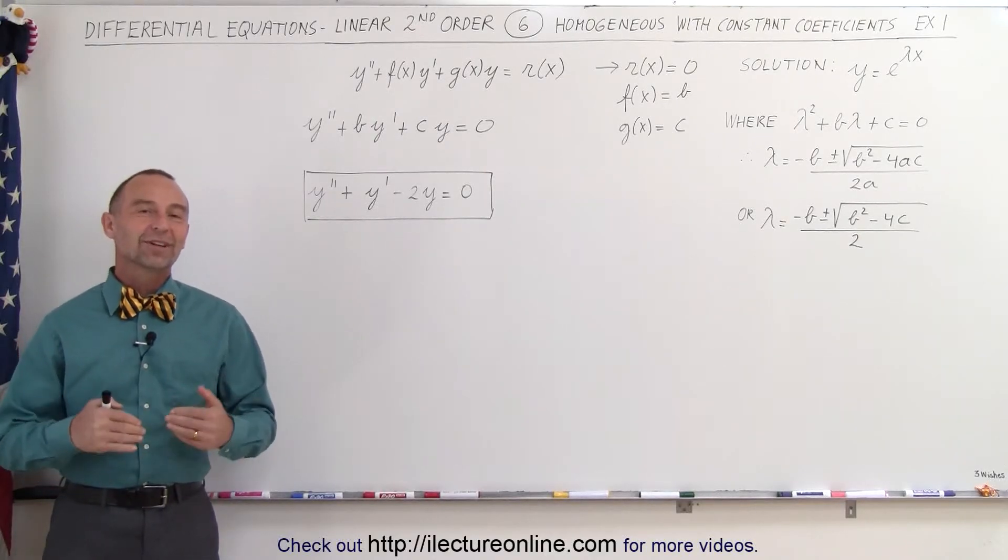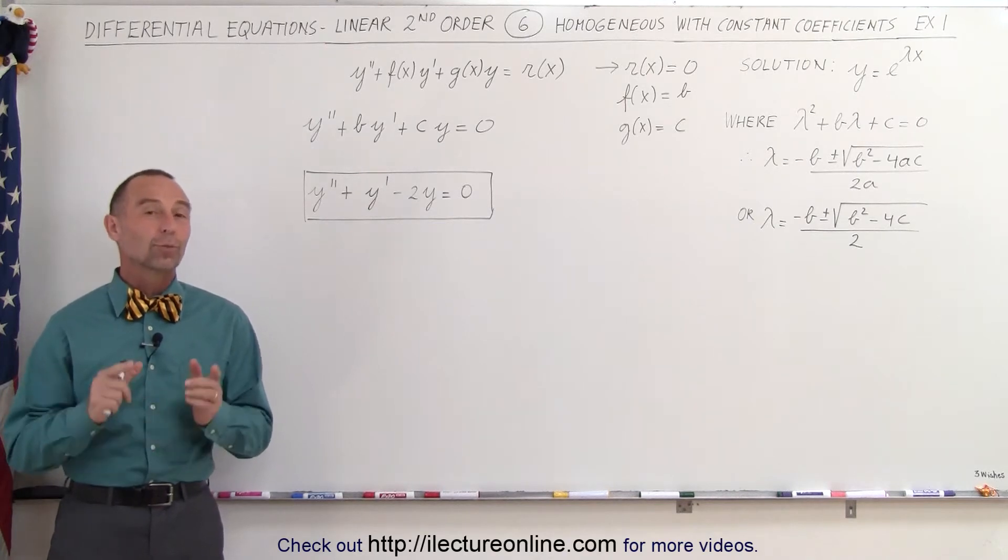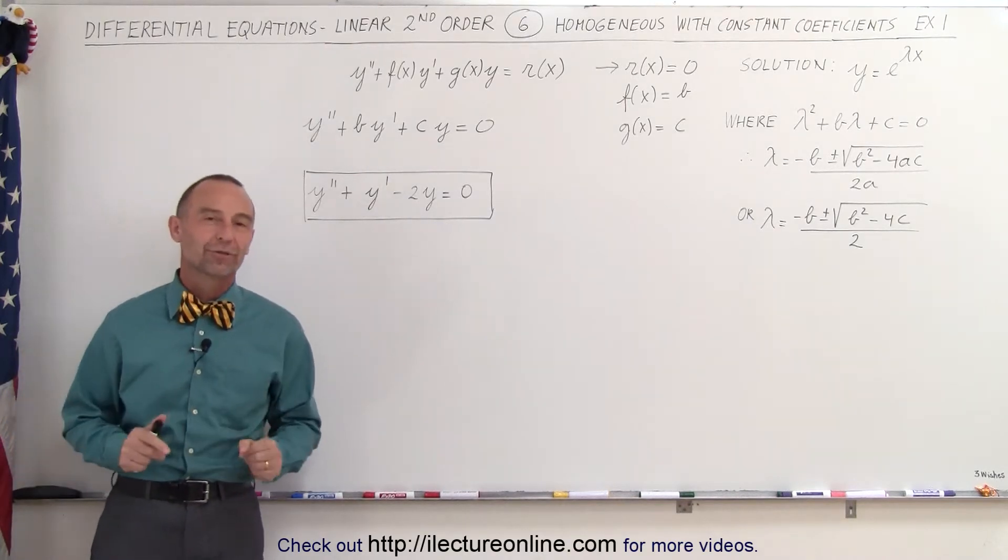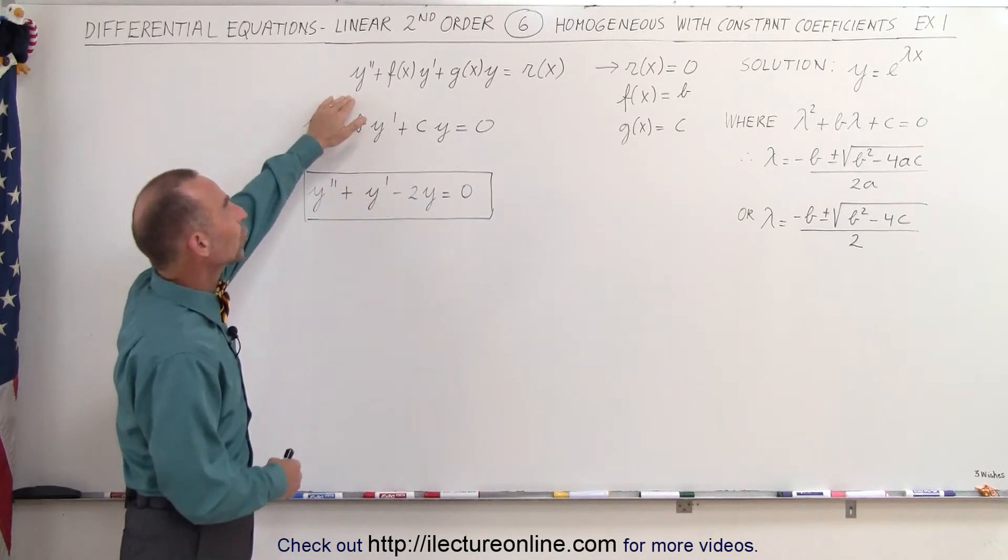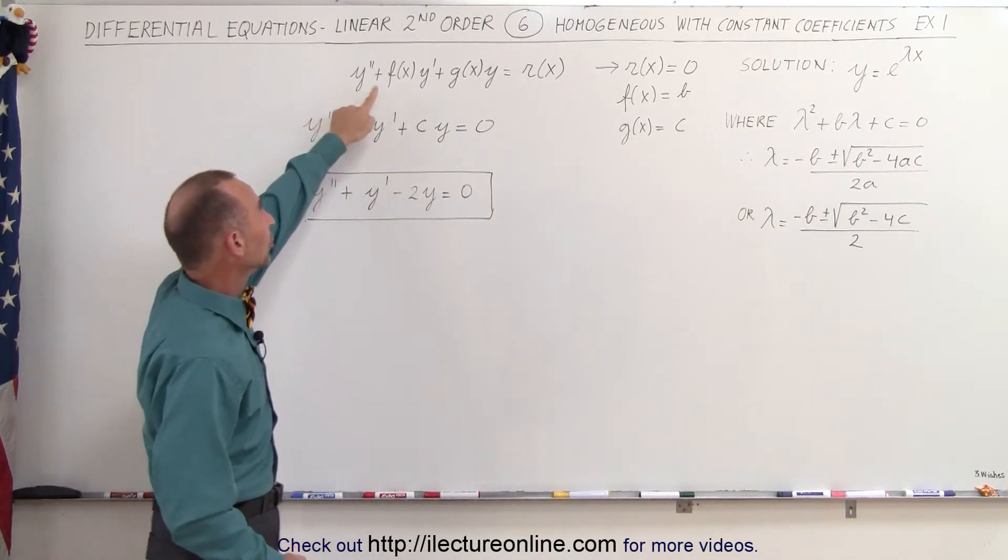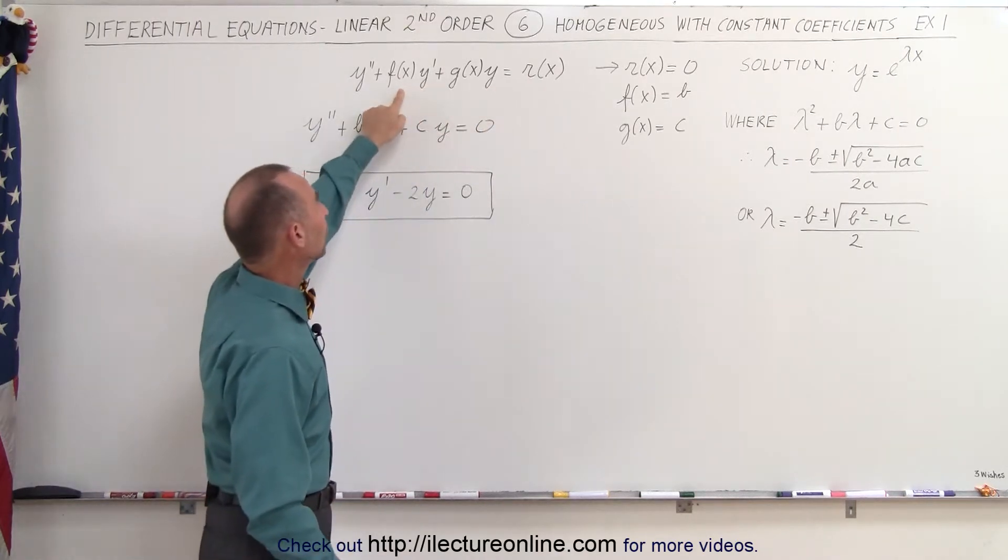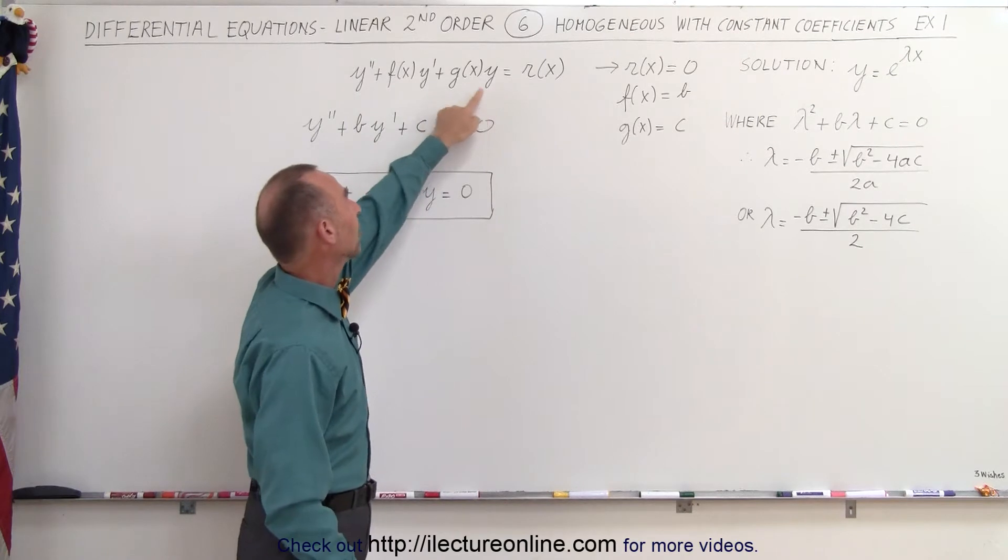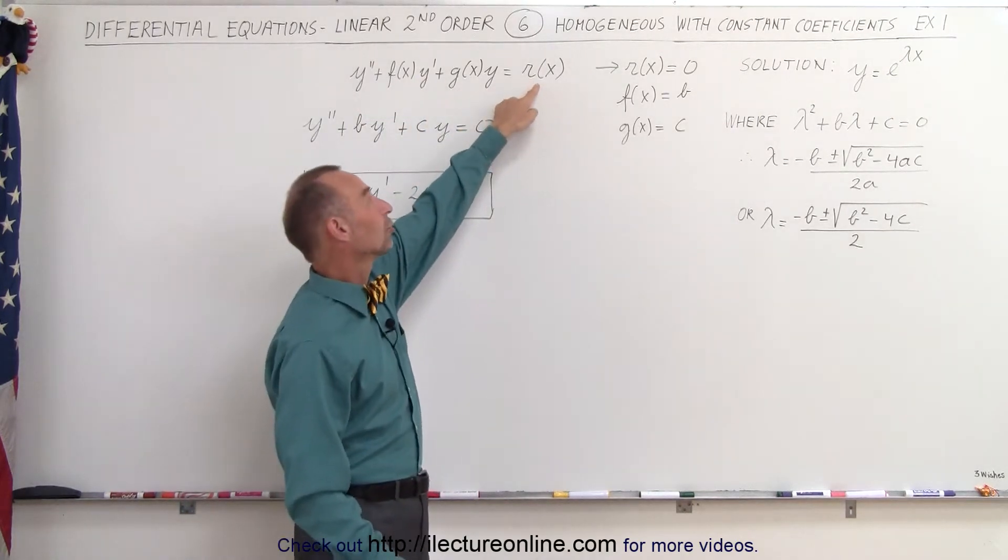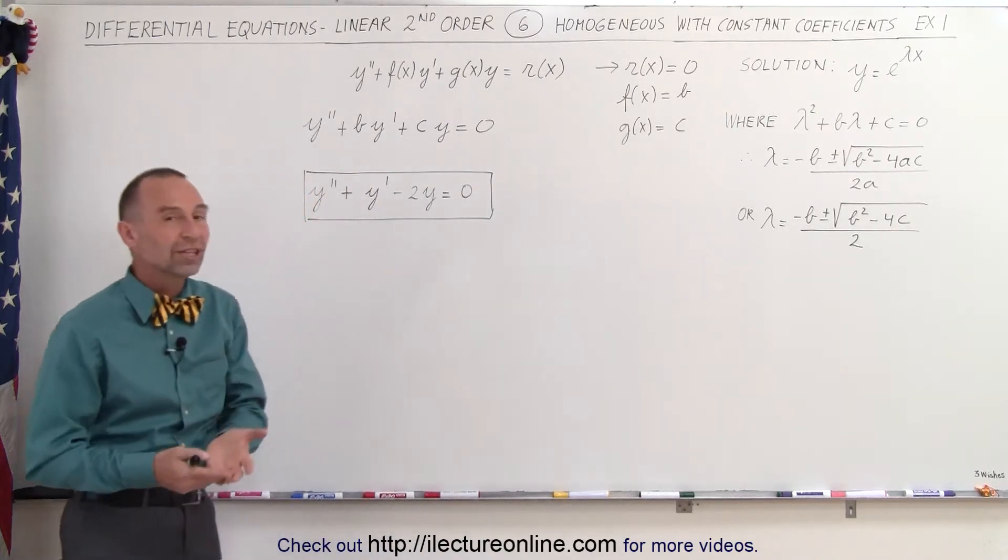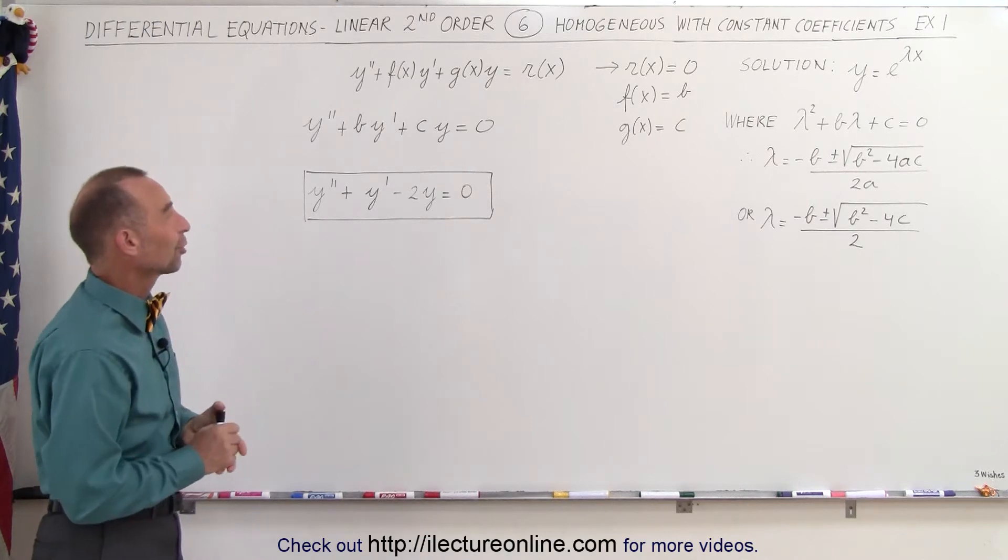Welcome to Electron Online. We're going to continue looking at second-order linear differential equations that are homogeneous and have constant coefficients. Here we have a general expression of what a linear second-order differential equation looks like. We have a y double prime term, a y prime term, and just a y term. The coefficients of the y prime and the y term are functions of x, and the term on the right side of the equal sign is also a function of x. That's the general form of a non-homogeneous second-order linear differential equation.